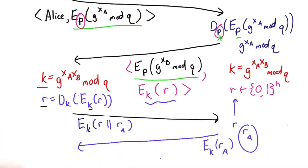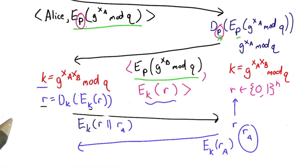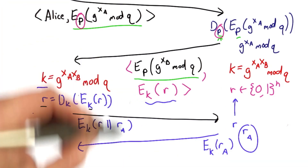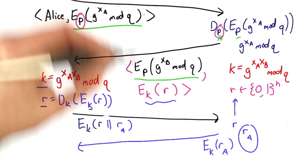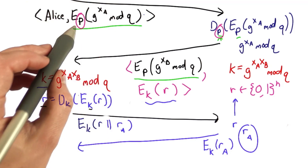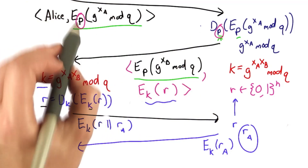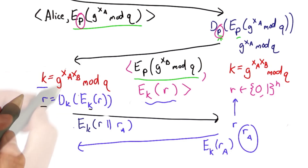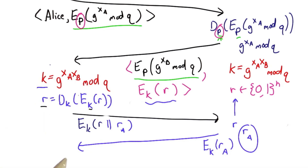At this stage, both the server and the client have proved knowledge of the password. They've established a shared secret that they can use for further communication, and they've done this in a way so that even if there's an active attacker intercepting and modifying all these messages, if the attacker doesn't know the password P, they can't trick the client and server into believing they're talking with each other or establishing a different key.